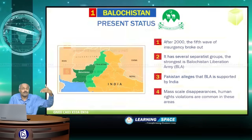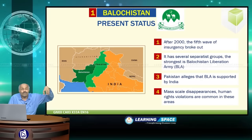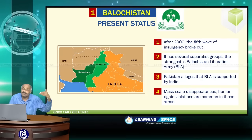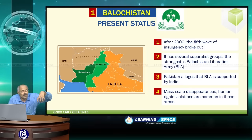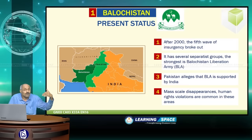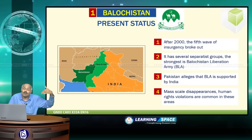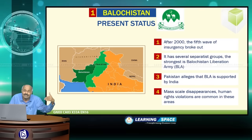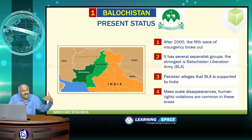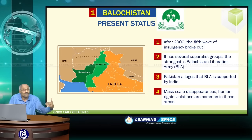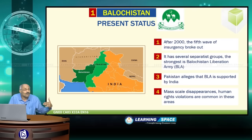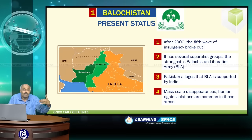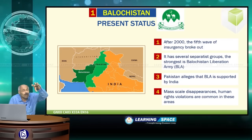Regarding the present status of Balochistan: after 2000, the fifth wave of insurgency broke out. There are several separatist groups, the strongest being the Balochistan Liberation Army. Pakistan alleges that the BLA is supported by India. Mass-scale disappearances and human rights violations are quite common in these areas. Technically speaking, India has nothing to do with Balochistan, but India has everything to do with Azad Jammu Kashmir and Gilgit-Baltistan.